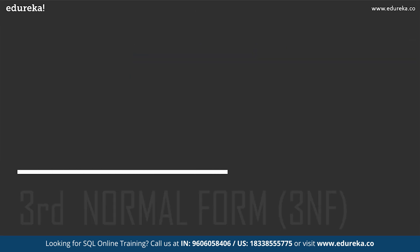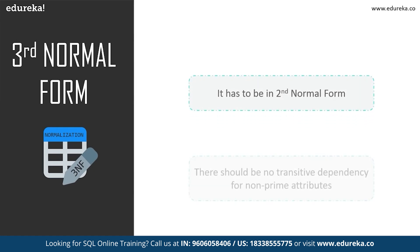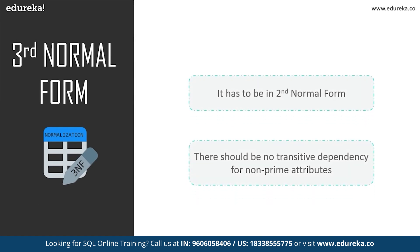Next is third normal form, used to reduce duplication of data and ensure referential integrity. Two conditions must be met: the table must be in second normal form, and no non-prime attribute should be transitively dependent on another non-prime attribute. Simply put, if C depends on B and B depends on A, then transitively C depends on A — this should not happen. All non-prime attributes must depend only on prime attributes.